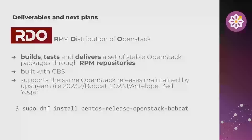We test them through different scenarios by enabling or disabling some services or features. We run it through CI pipelines, and if all goes well, we promote the content into testing repositories and then into the release.